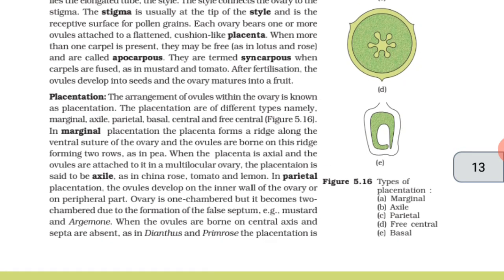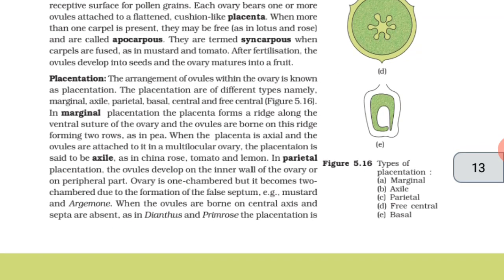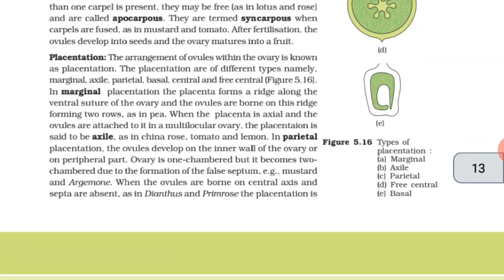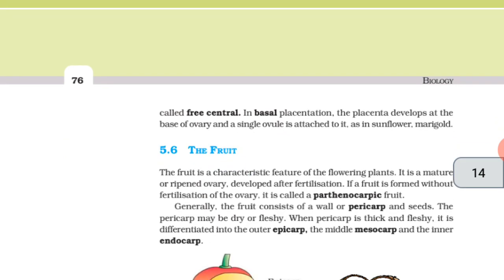When the ovules are born on central axis and septa are absent as in Dianthus and primrose, the placentation is called free central. In basal placentation, the placenta develops at the base of ovary and a single ovule is attached to it as in sunflower and marigold.